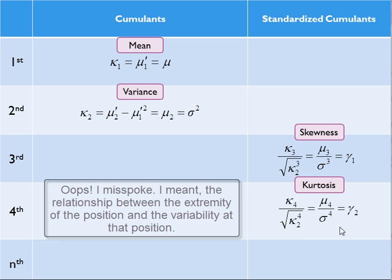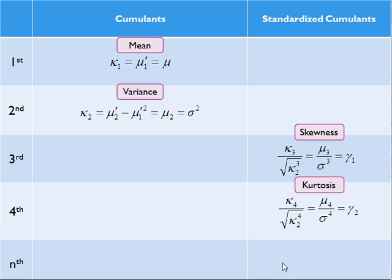What is there after kurtosis? There are lots more cumulants, standardized cumulants, moments, and standardized moments, but those ideas have diminishing returns. For most purposes, we know quite a lot about a distribution when we know just these four things — mean, variance, skewness, and kurtosis. We don't know everything, but we know a lot.